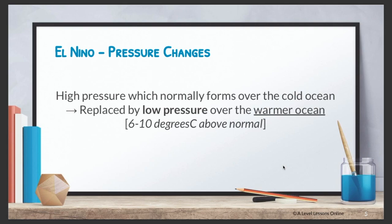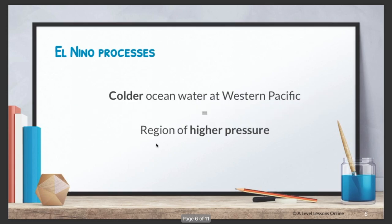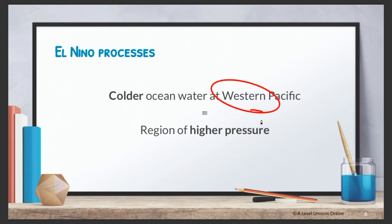So what are the pressure changes that occur? The high pressure that usually forms over the cold ocean is now replaced by low pressure over the warmer ocean. Since high pressure corresponds to low temperature and low pressure to high temperature, with a warmer ocean there is naturally a region of lower pressure — this can be six to ten degrees Celsius above normal temperature. Meanwhile, the colder ocean water at the western Pacific, basically Australia, forms a region of higher pressure, meaning it becomes very cold and very dry during El Niño.